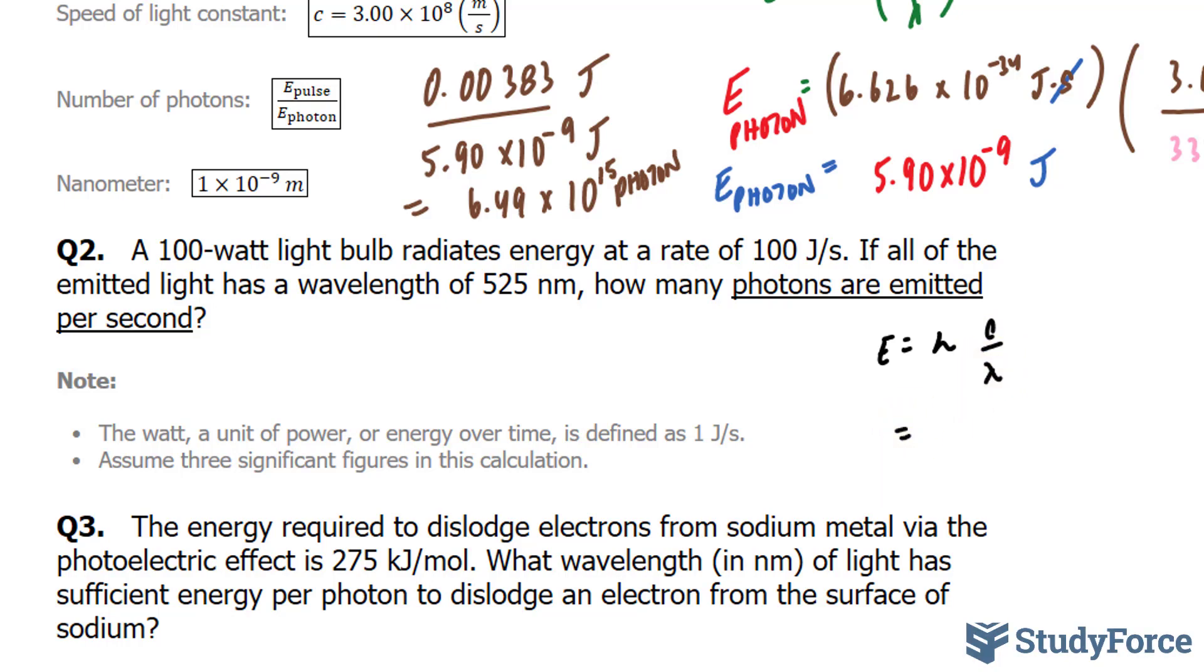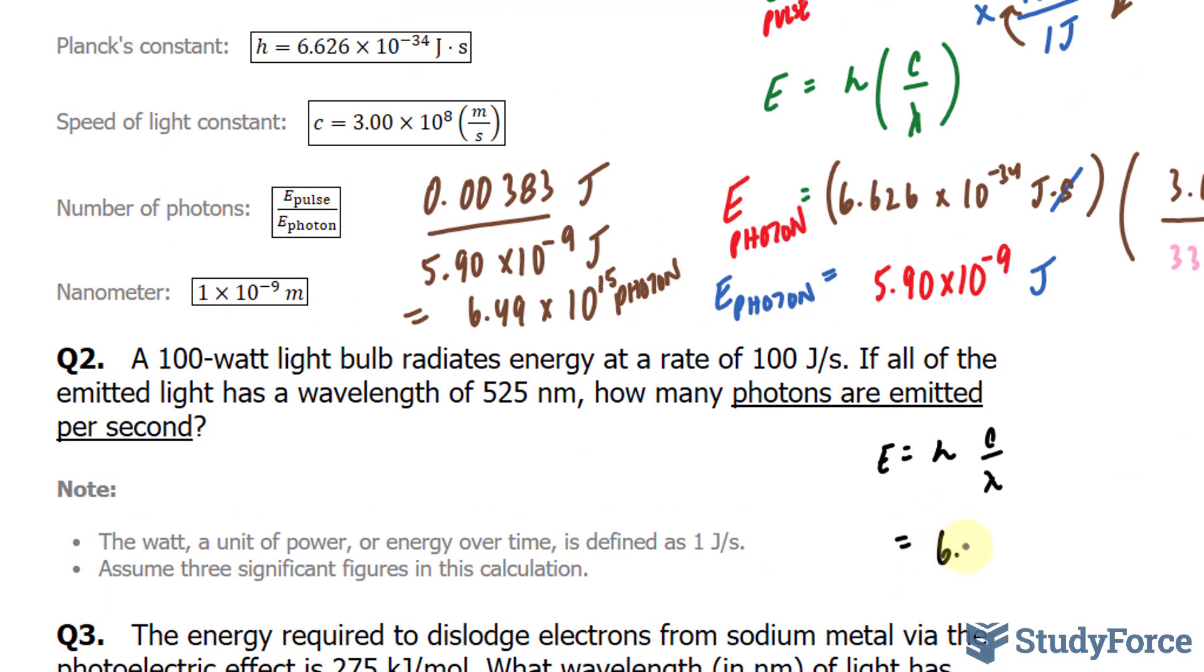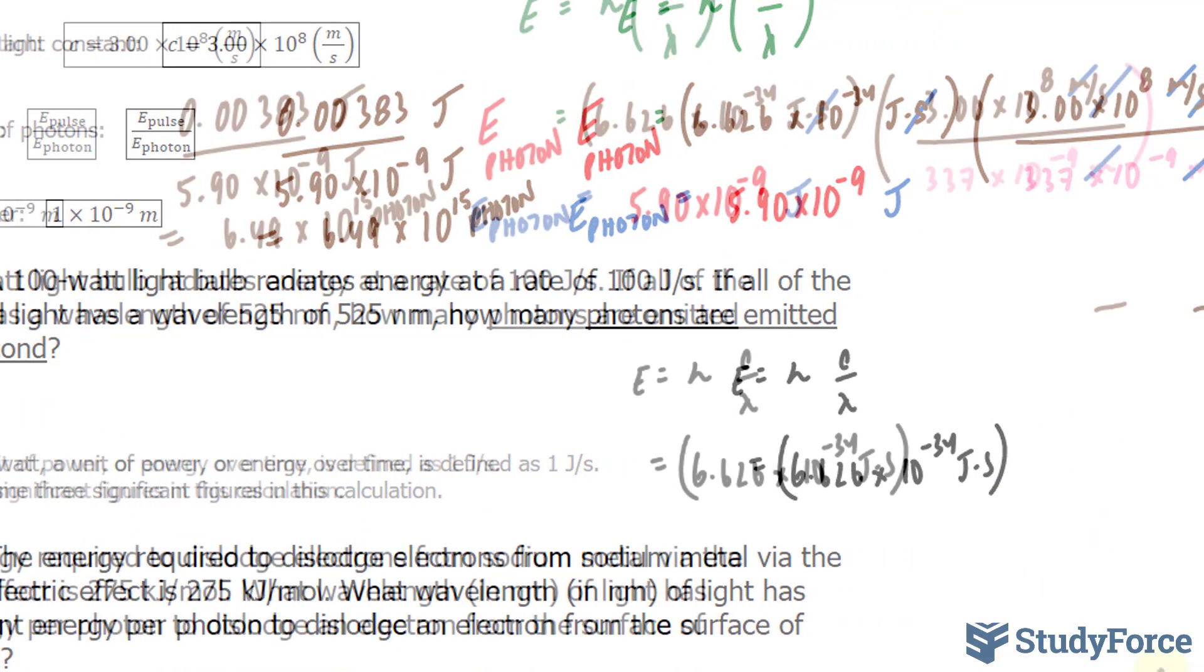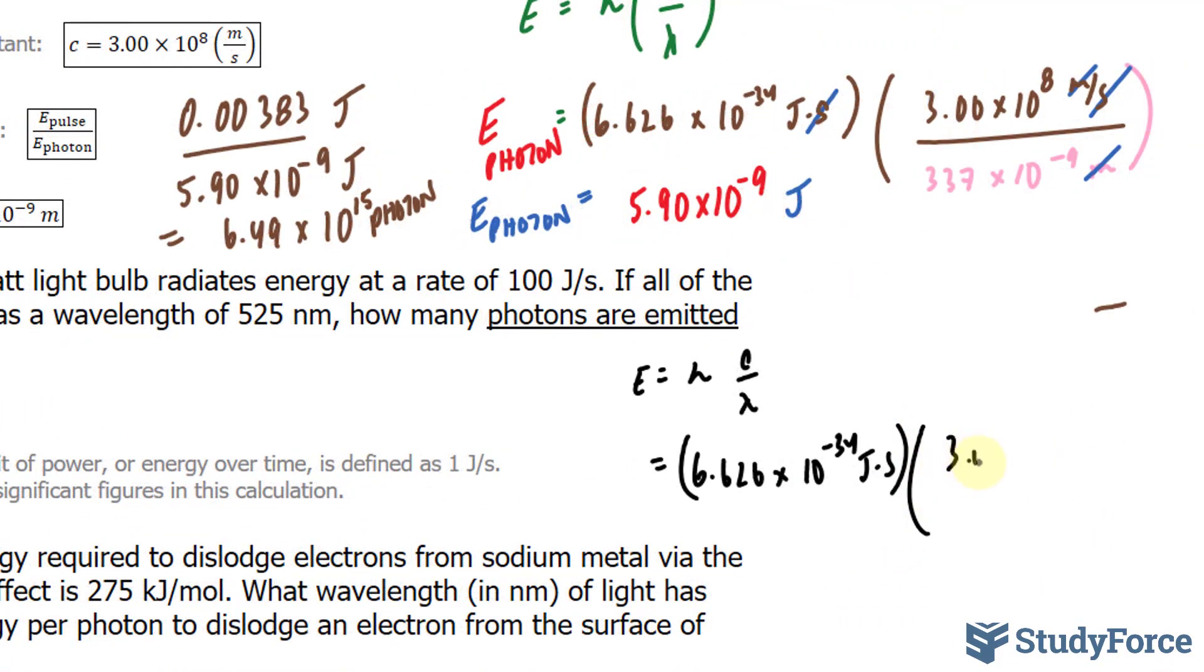H represents Planck's constant, and that's right here. We have 6.626 times 10 to the power of negative 34 joules per second, and that's being multiplied to the speed of light. So I'll write that down next to it: 3.00 times 10 to the power of 8 meters per second over the wavelength of 525 nanometers. Now we have to find out what that is in meters, and we can do that by writing it out as 525 times 10 to the power of negative 9 meters.